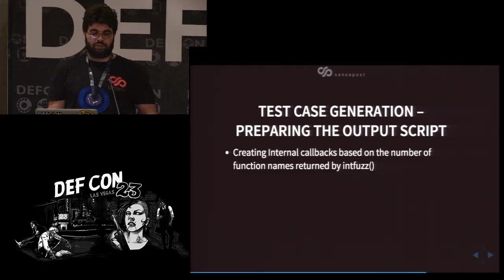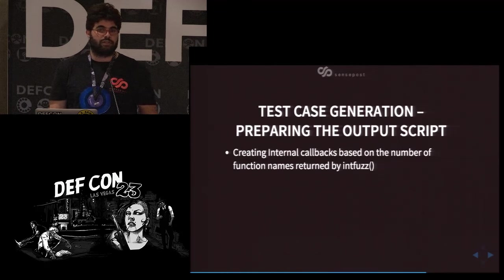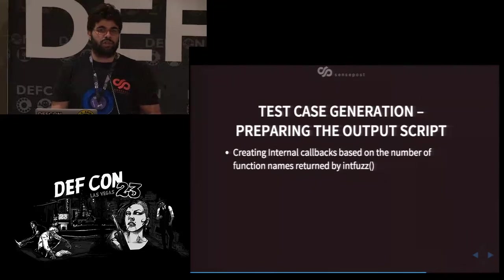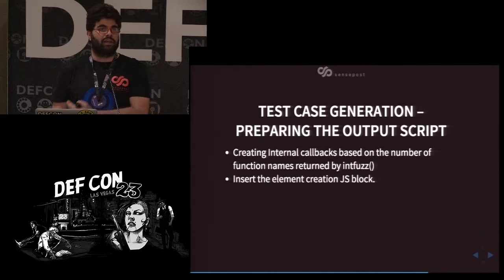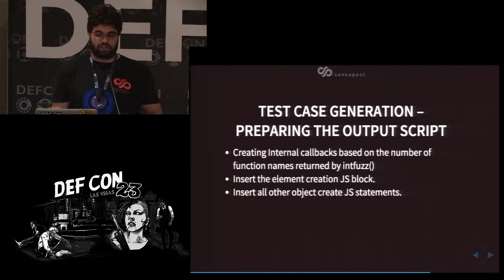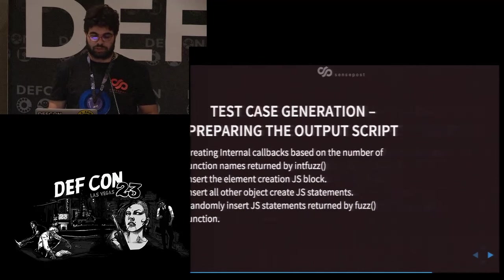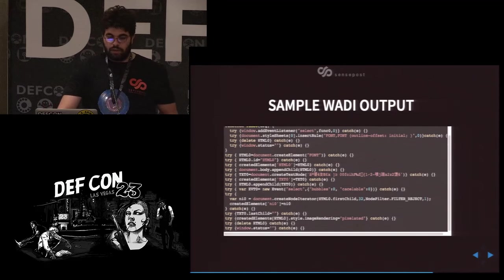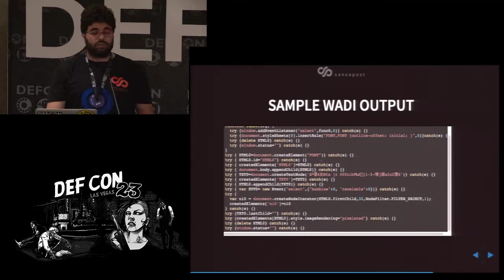The last step is how wadi prepares and outputs the string. It generates random function names to be used as callbacks for events or mutation observers. It then collects all JavaScript statements related to element creation — main elements, mutation observers, and dynamically created elements. It inserts object creation statements like node iterators, and finally randomly inserts the JavaScript fuzzing statements for all interfaces and objects. The output is fully dynamically generated — none of it is manually created — and appears between script tags in a full HTML document.